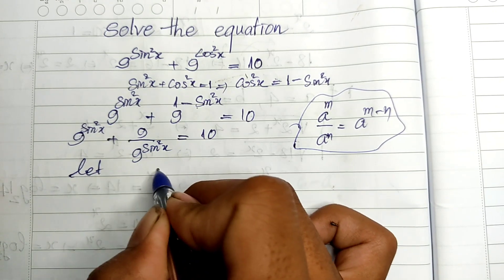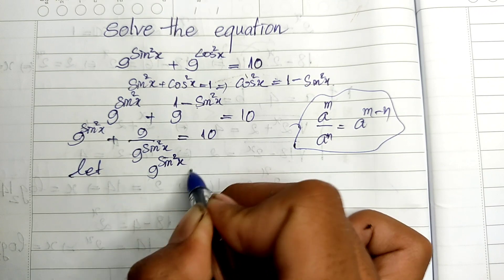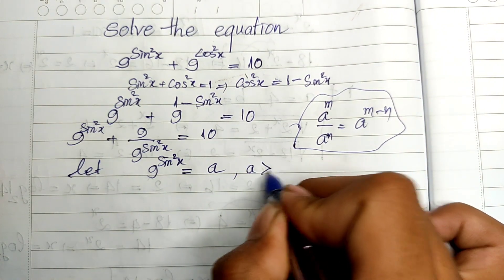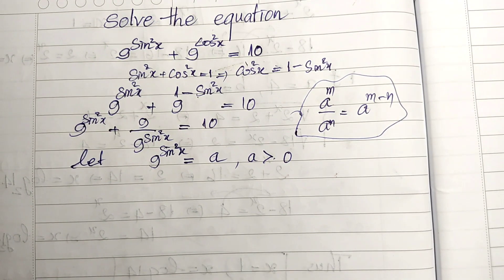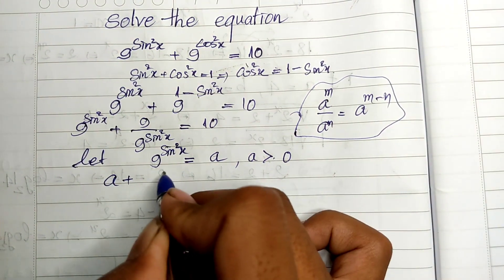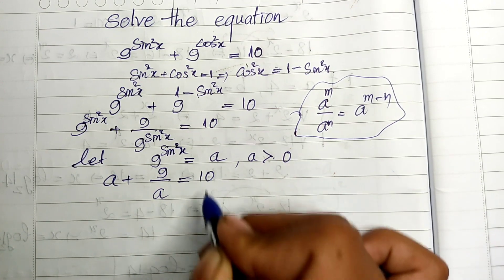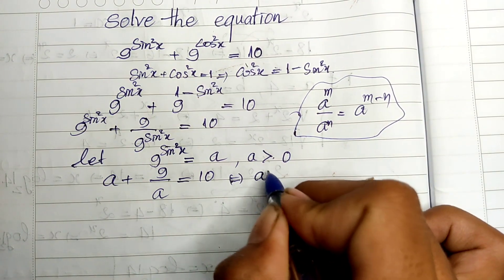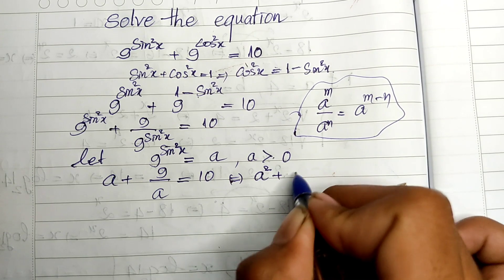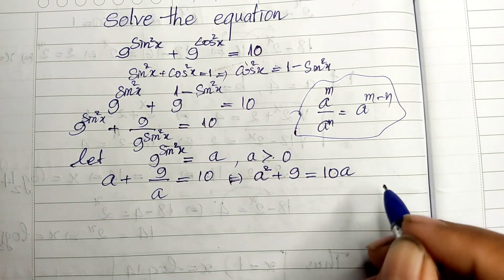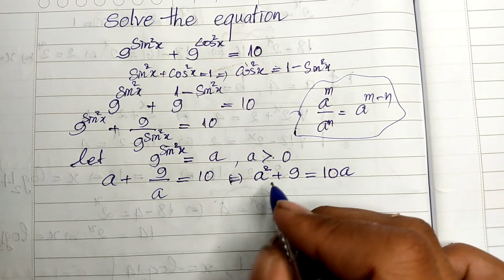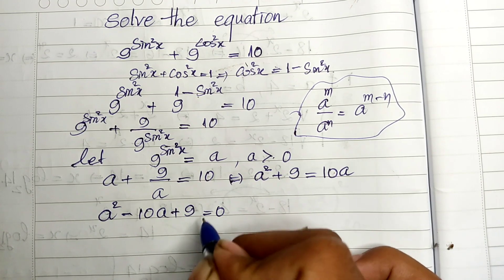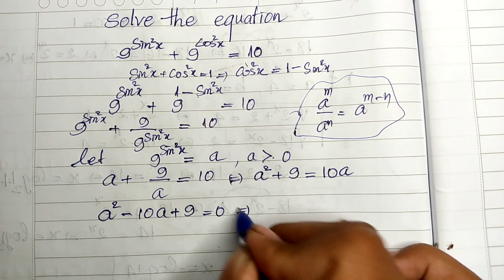Now let a = 9 to the power of sine squared θ, where a is positive. So we get a plus 9 divided by a equals 10. Then I multiply both sides of the equation by a, and I get a squared plus 9 equals 10a.